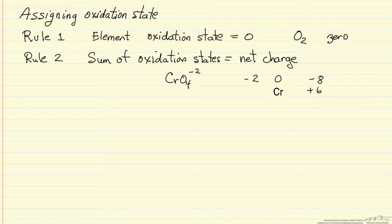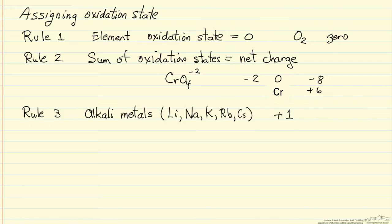The next rule says that if we have an alkali metal in a compound, its oxidation state is plus 1. For example, in sodium chloride salt, sodium is plus 1, and the chlorine must be minus 1 to satisfy rule 2.